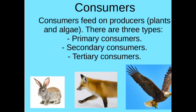The next group of animals is called consumers. The food chain begins with plants producing food, and plants are eaten by consumers. Consumers are classified as primary consumers, secondary consumers, and tertiary consumers.